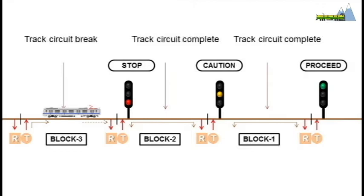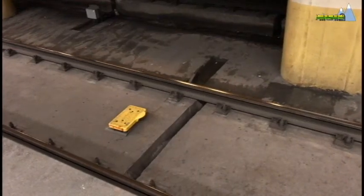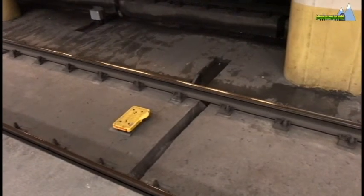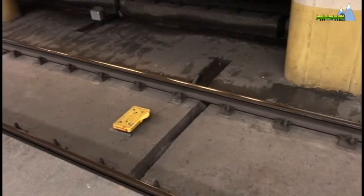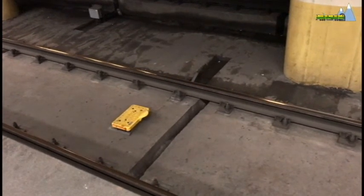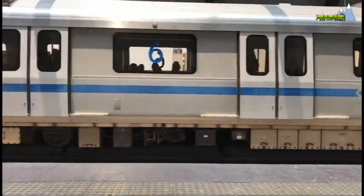In denser traffic, the number of signal aspects may be increased. Modern railway systems use automated traffic signaling. Sensors placed along the track, usually 300 to 400 meters apart, communicate with sensors in the train cars.